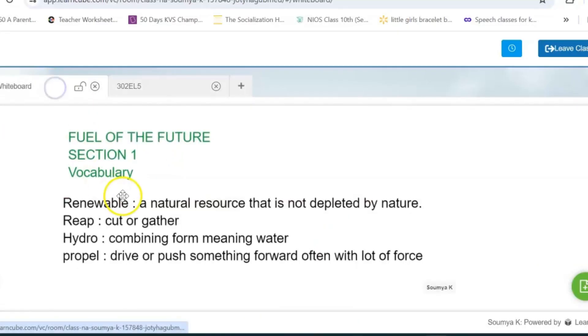Let's start. So you have to know some vocabulary words that are being used in section one. First one is renewable sources. Renewable is a natural resource that is not depleted by use. It's known as renewable energy, for example solar, wind energy, and all. Next one is reap, which is to cut or gather.